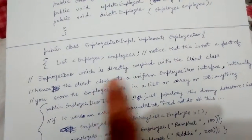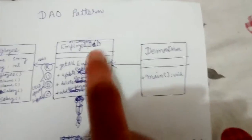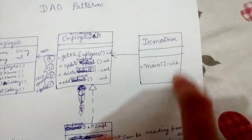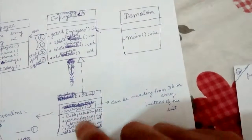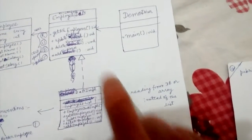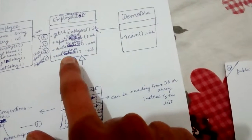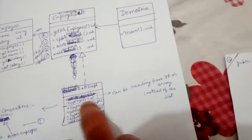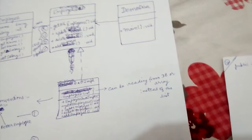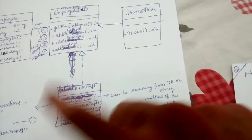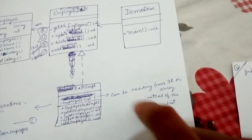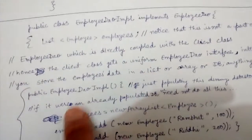If we define this list directly in the EmployeeDAO interface, it becomes directly coupled with the client class. But the implementation class is not coupled with the client. This is the benefit: the EmployeeDAO reference can point to any of the subclasses, following the Liskov Substitution Principle. At runtime we can point it to any of the subclass objects — that's the benefit.